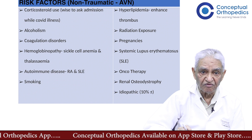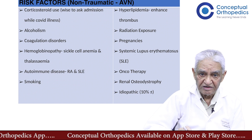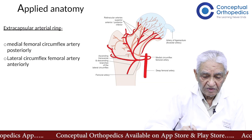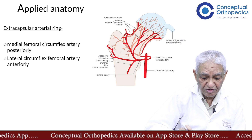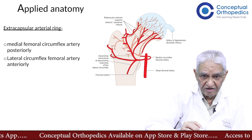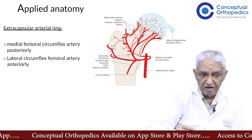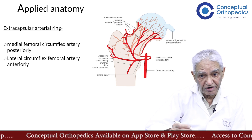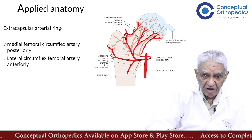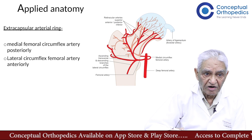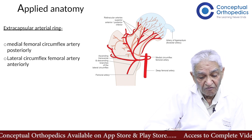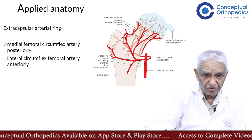Most people who get AVN of the femoral head, in addition to these risk factors, may also have many other co-morbidities. This demonstrates that the blood supply of the femoral head is precarious — it goes from the distal to the proximal side. In the femoral head, scaphoid, and talus, it goes from the body toward the proximal part, and what undergoes necrosis is the proximal part of the femoral head, proximal scaphoid, and proximal talus. As students, remember it is the proximal part of all these bones which can show osteonecrosis or AVN.